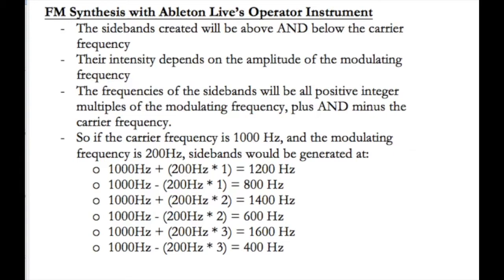So what is the frequency content we're going to get out of all these extra side bands generated in frequency modulation? I'm going to talk a little bit about the math here — this is a simplified version, it's actually a bit more complex, but this gives you the most basic idea. We're going to be creating side band frequencies both above and below the carrier frequency. Their intensity — their loudness — will largely depend on the amplitude of the modulating frequency. The higher the amplitude of the modulating frequency, the more intense you will hear all of these different side bands.